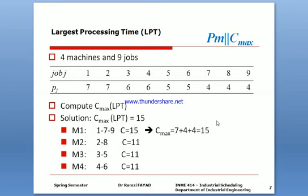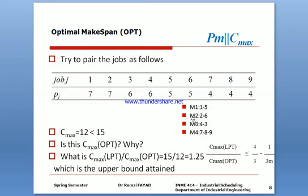Coming back to the equation, we have 4 over 3 — which equals 1.34 — minus 1 over 3 times 4, because we have 4 machines: M1, M2, M3, M4. So it's 4/3 minus 1/12, which equals 1.267. The C_max value here is 15, which is the first value we obtained, and we're going to work with C_max optimal to see what we get. We want the ratio to be less than or equal to 1.267.